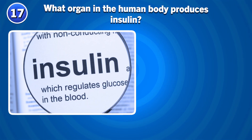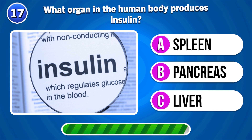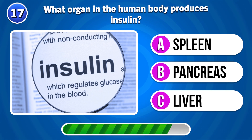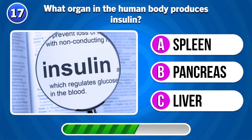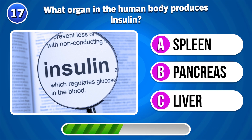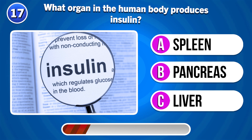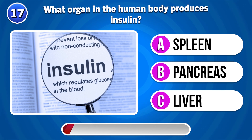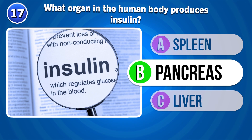What organ in the human body produces insulin? Pancreas.